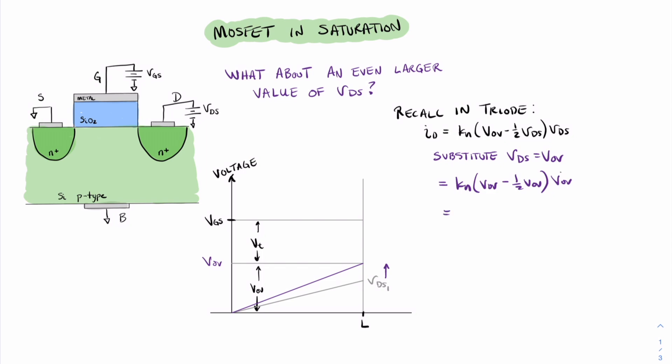First, let's distribute the value of VOV. So we have KN VOV squared minus one-half VOV squared. And of course, VOV squared minus one-half VOV squared will give us KN one-half VOV squared.